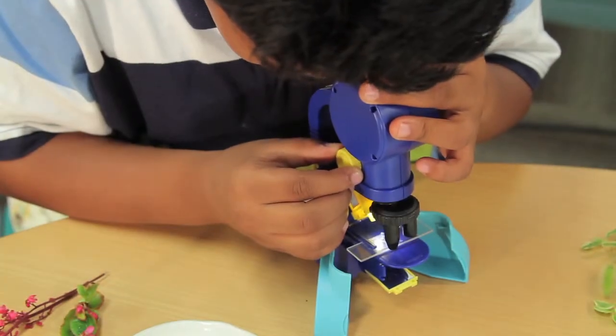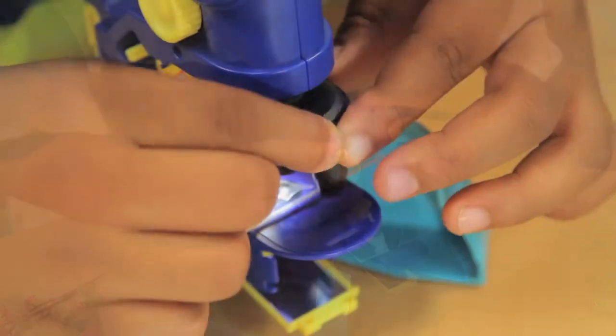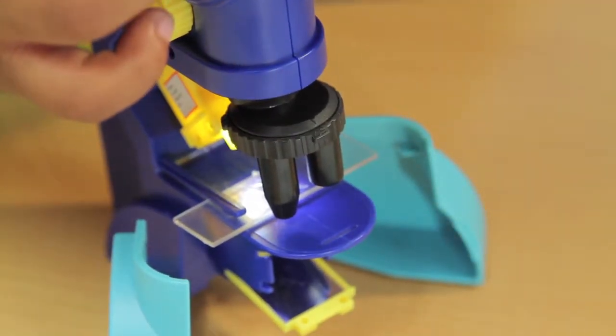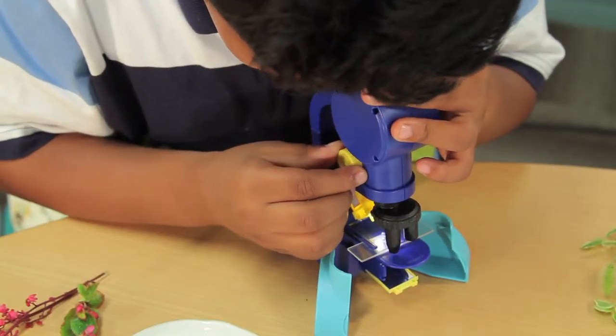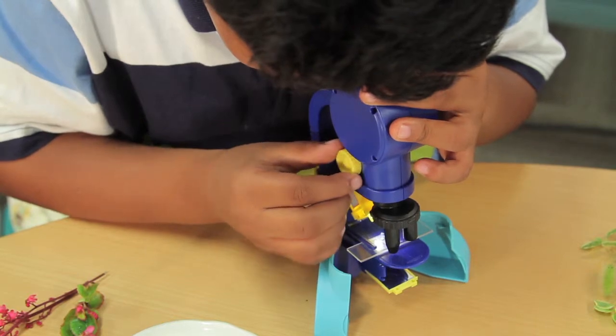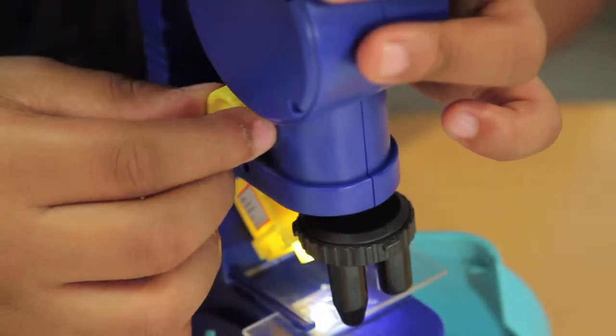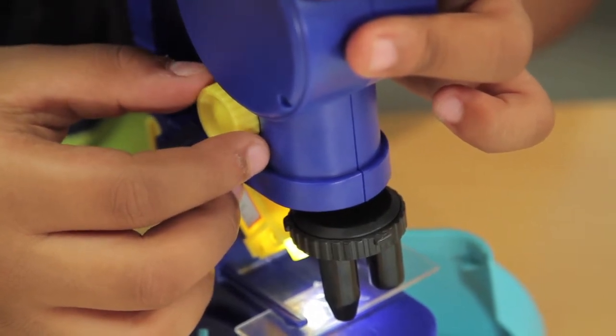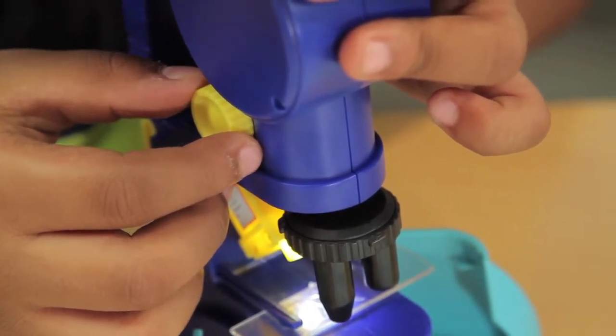Next, adjust the focus. First, set the object lens to 50x magnification. Lower the object lens toward the slide. Look through the eyepiece and adjust the focus. Raise the lens slowly to find the position where the object comes into sharpest focus.